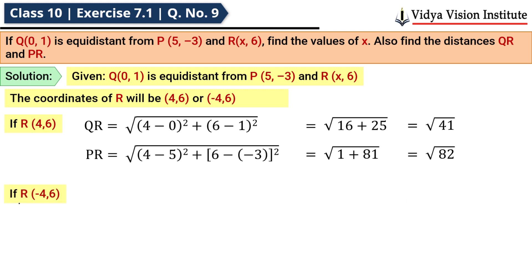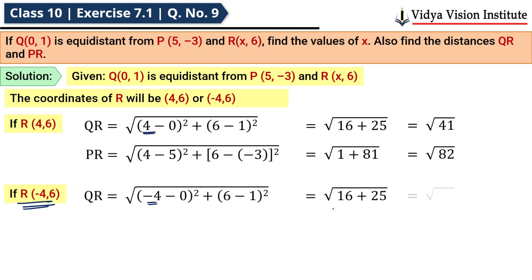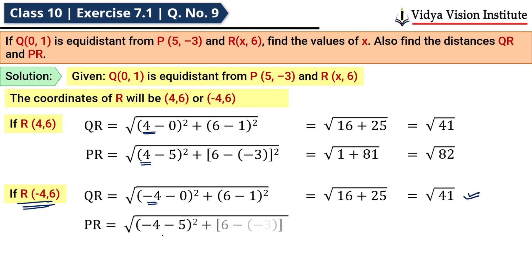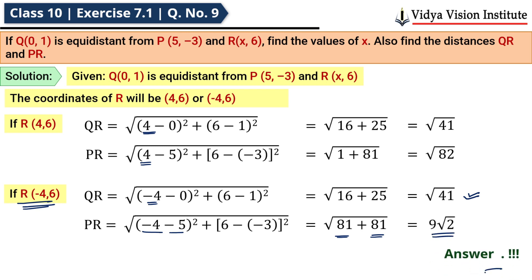If R = (−4,6), then QR mein 4 ki jagah −4 rakhenge — value same aati hai √41. Aur PR mein: (−4−5) = −9, (6−3) = 3, so PR = √[81 + 9] = √90 = 9√2. Yahi hamara answer hai. Bahut hi simple question hai — bas formula mein value rakhni hai aur answers aa jaate hain.